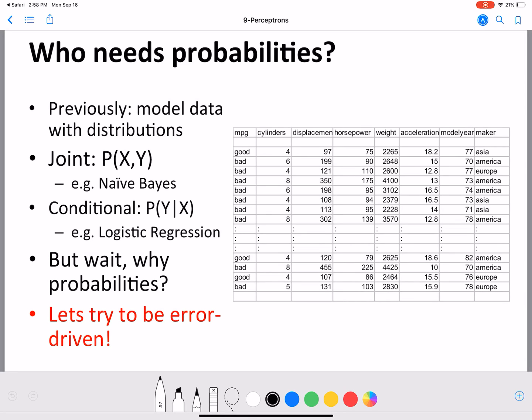So we saw naive Bayes and logistic regression so far in this course, and both of these models are probability driven. We first calculate the probability, either the joint probability P of X comma Y, or the conditional probability directly using the logit function as we did for logistic regression, P of Y given X.